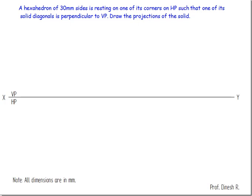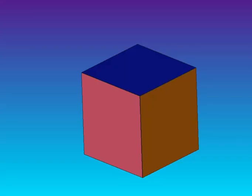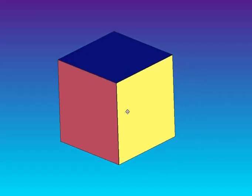Let's understand the next type of solid called the hexahedron. Hexa means six, hedron means faces — so a solid having six equal sided faces. That is nothing but a cube, so we are going to draw a cube.